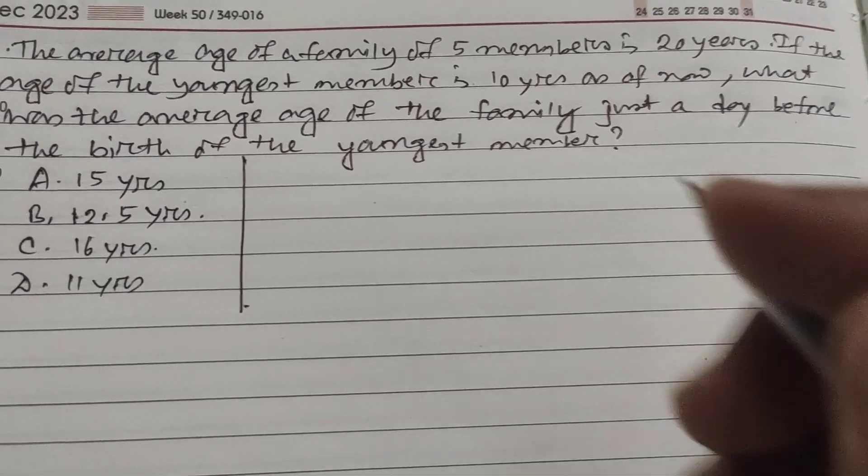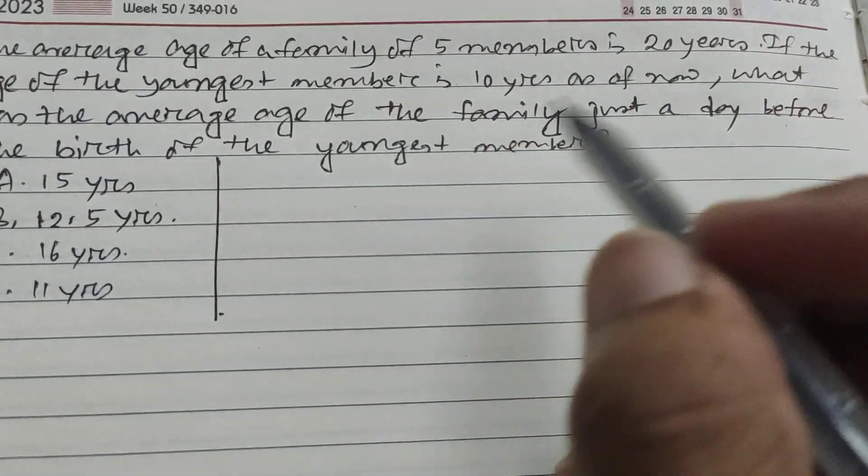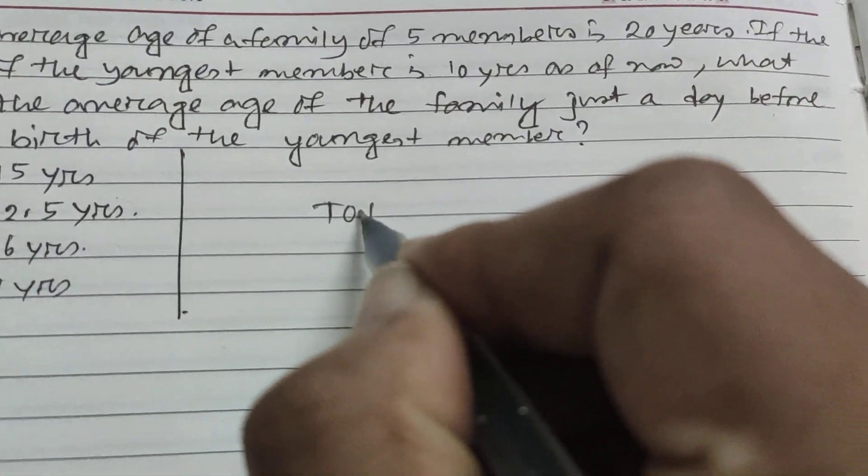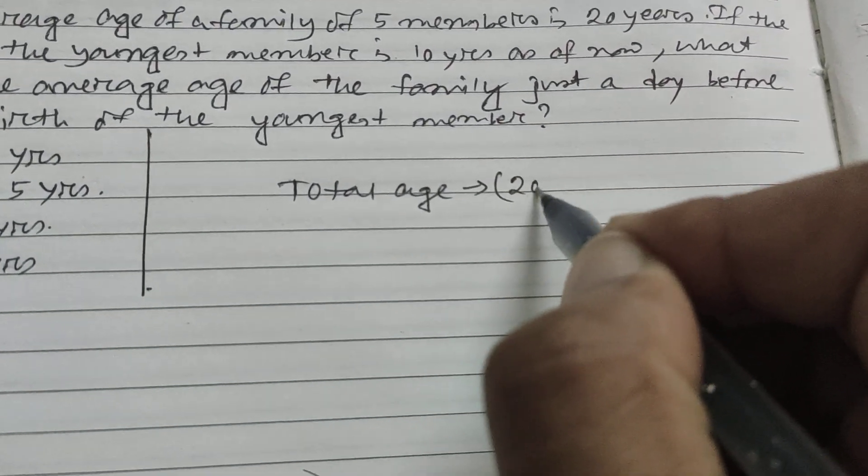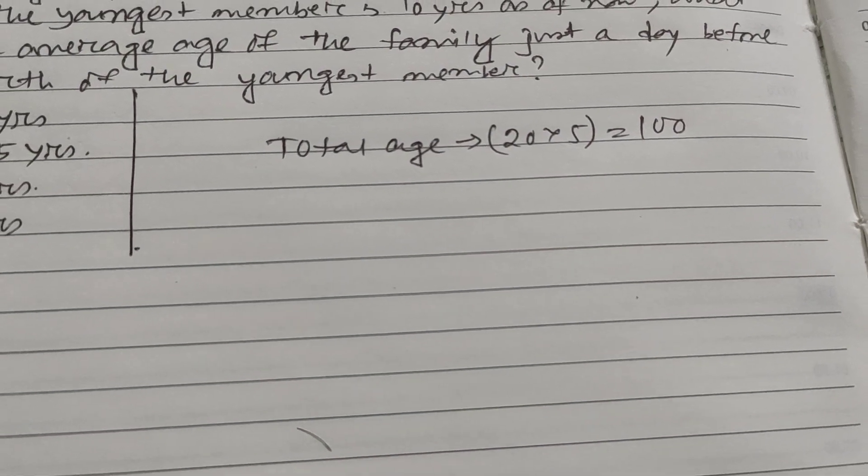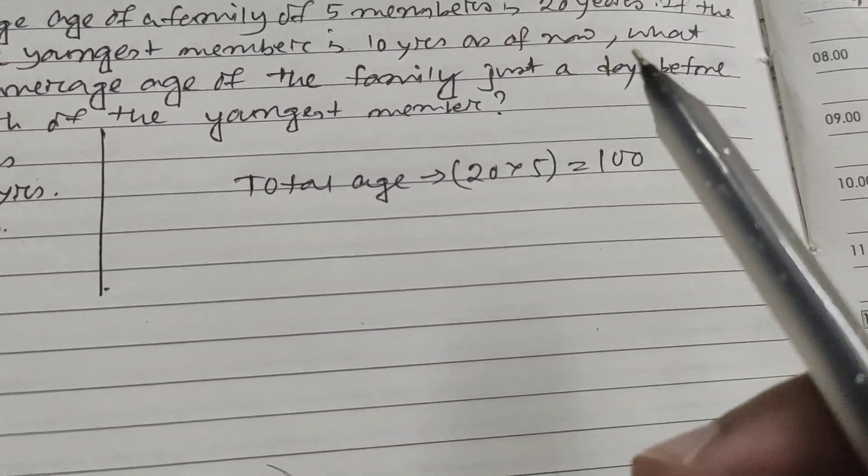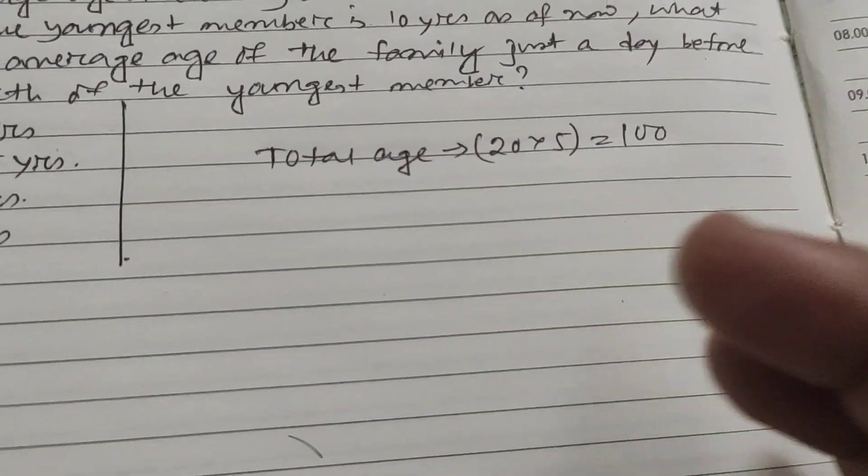The average age of the five members in the family is 20 years, so total age of that family is 20 multiplied by 5, which is 100. Since the youngest member is currently 10 years old, one day before the birth of the youngest member means 10 years ago.